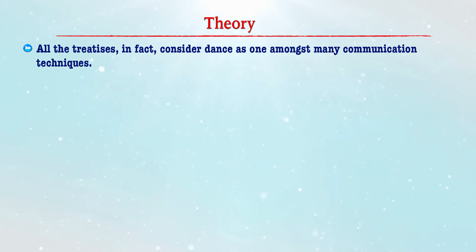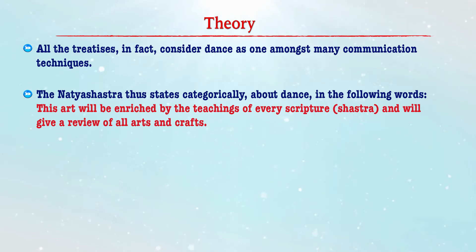The theory of Indian dance is holistic in its exposition and cannot be understood in isolation without taking into account the techniques of dance. At the level of technique, the art of dance has to be comprehended as an interesting synthesis of the arts of sculpture, painting, music and even literature. The dance texts combine all the above performing arts and consider dance among the many communication techniques. The Natya Shastra states that this art of dance is enriched by the teachings and practices of relevant gurus over a period of time. The theory of dance is an integral part of the tradition of drama, which is Natya.